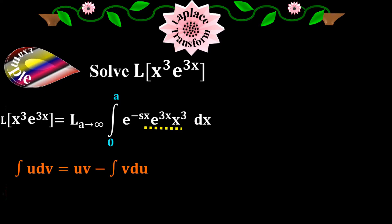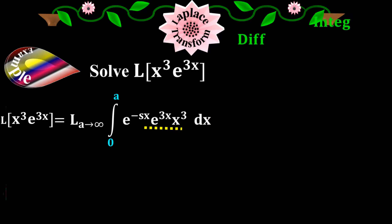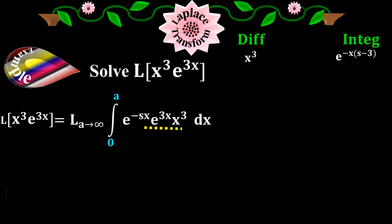Since there is one pure algebraic term x to the 3, I'll apply the tabular method — pure differentiation and integration. Place x to the 3 under differentiation and e to the minus sx times e to the 3x under integration. Since e to the minus sx and e to the 3x have the same base, take one e and factor x from the power. The derivative of x to the 3 is 3x squared. The integration of e to the minus x times (s minus 3) equals minus e to the minus x(s minus 3) over (s minus 3).